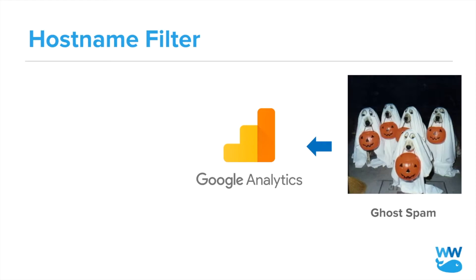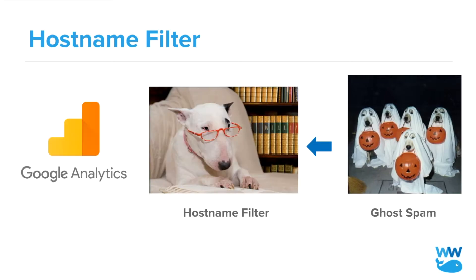But ghost spam isn't totally undetectable — it appears as fake hostnames in your GA account. The simplest way to block this spam is by using a custom hostname filter to tell GA which hostnames belong in the account and which ones don't. You could think of this filter as a hostname guest list, keeping out unwanted guests.